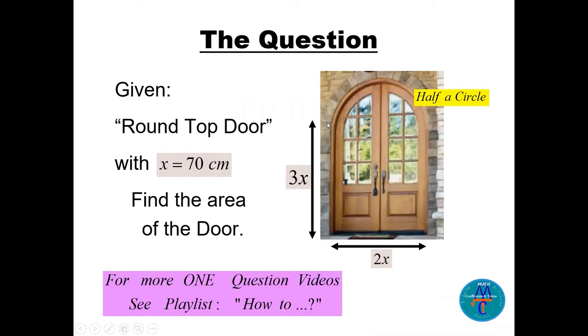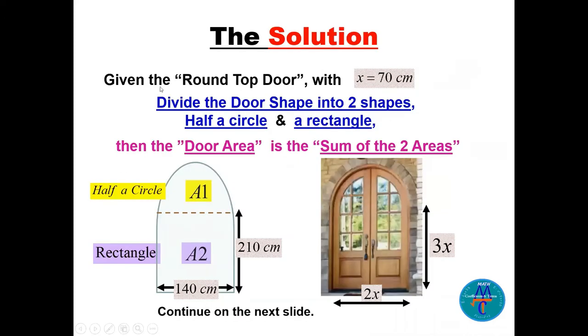a half circle here on the top. We need to find the area. Let's divide the whole shape into a half circle, which we'll call A1, and then A2 will be the area of the rectangle.